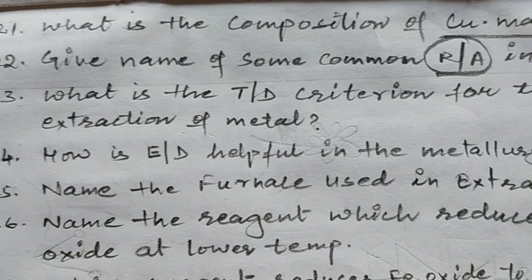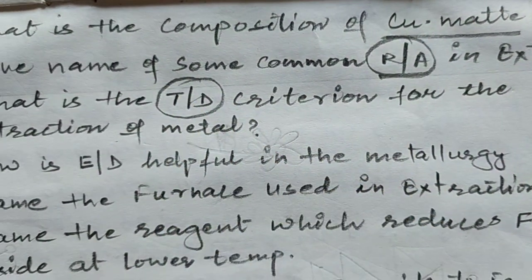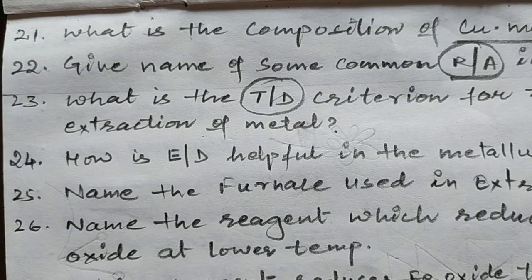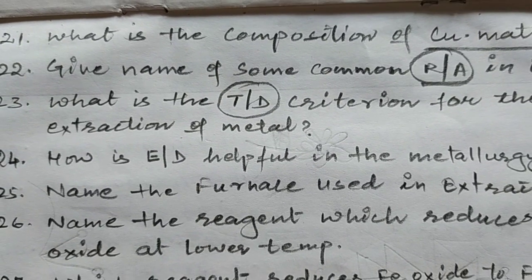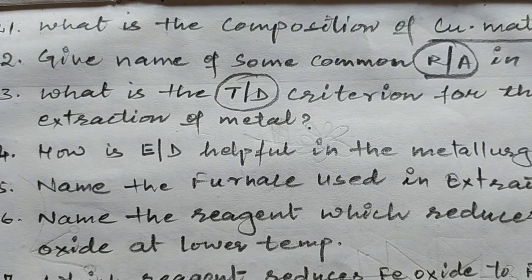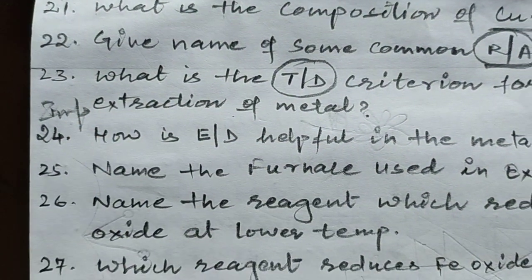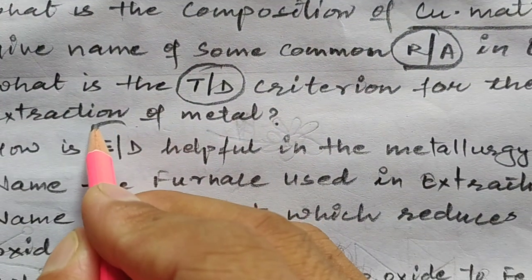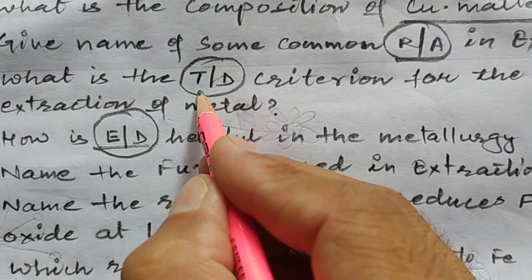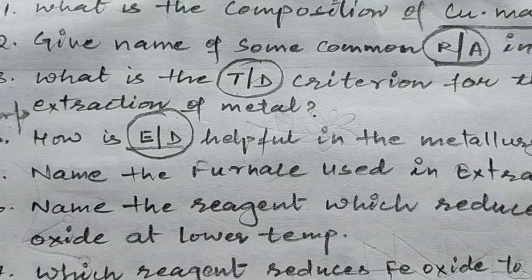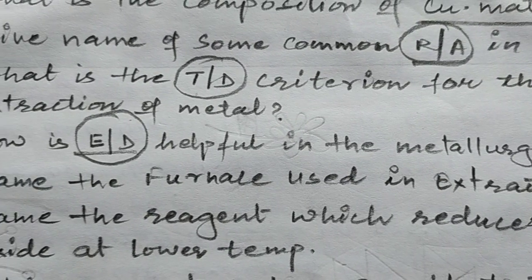Question number 23: what is the thermodynamic criteria for extraction of a metal? You can be asked questions from thermodynamics. The Ellingham diagram, abbreviated as ED, is a very important topic. TD stands for thermodynamics. Question number 24: how does the Ellingham diagram help in the metallurgy process?